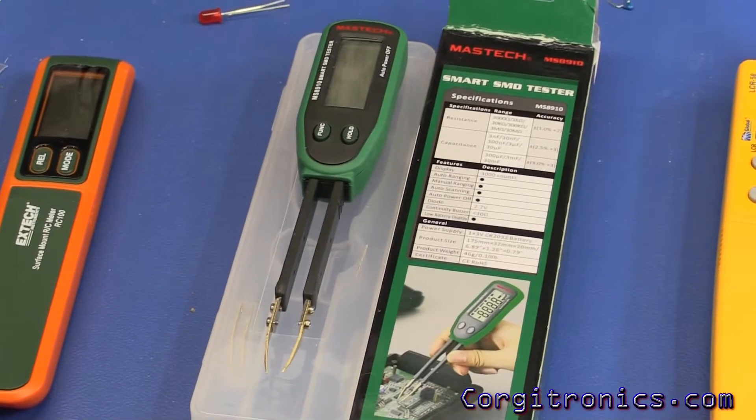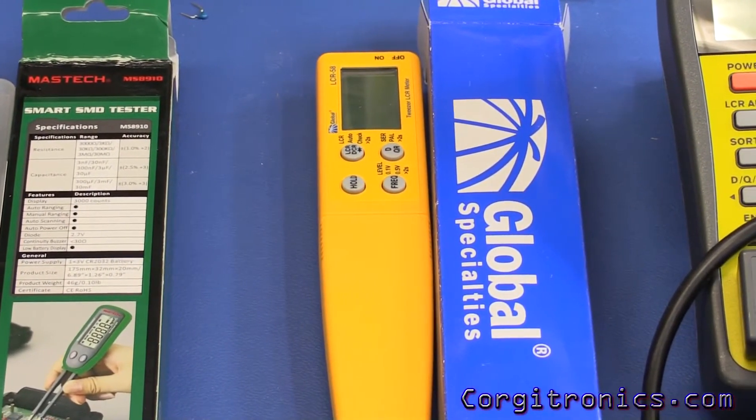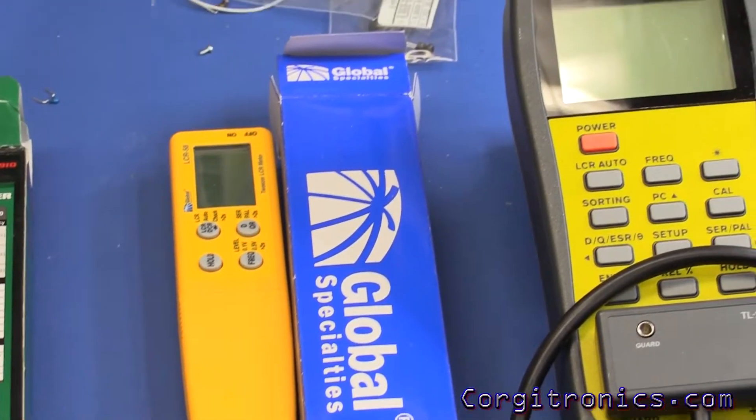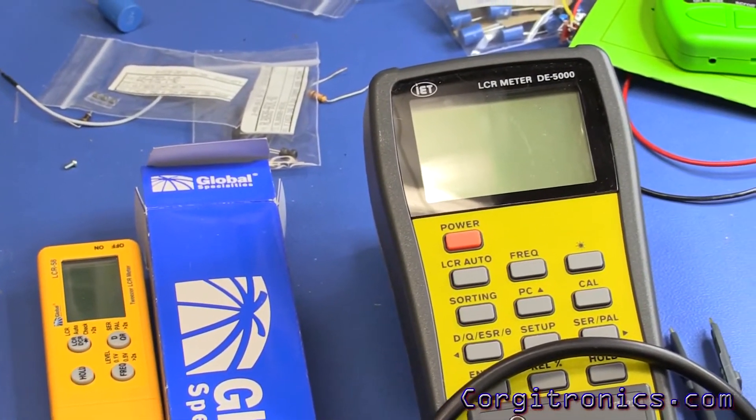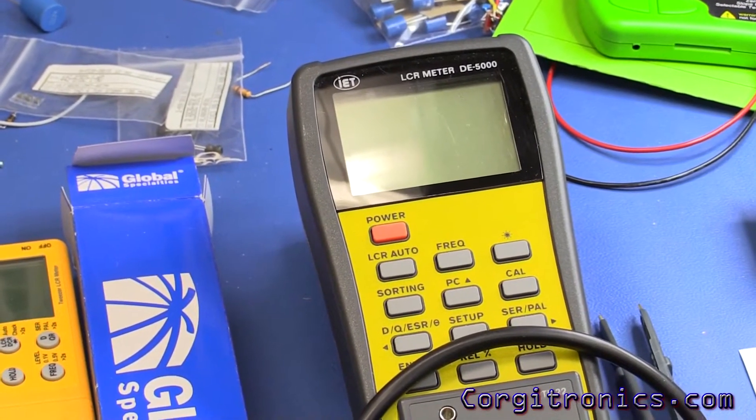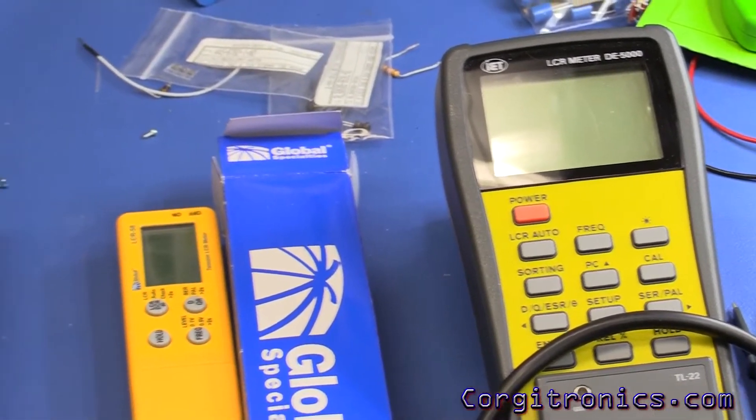Then I ended up with the Maztec 8910. Recently I came across the Global Specialties, I think this is the LCR-58 model. What I'm going to do is check them against my older IET DE-5000 that I've had for a few years. Today we'll just look at the first model that I got, which was the XTEC RC-100.